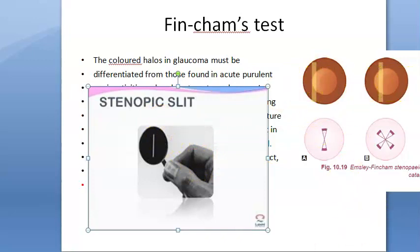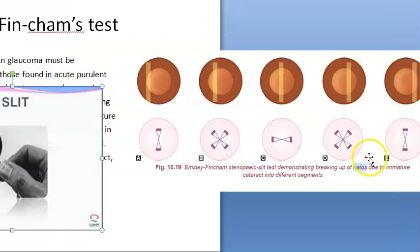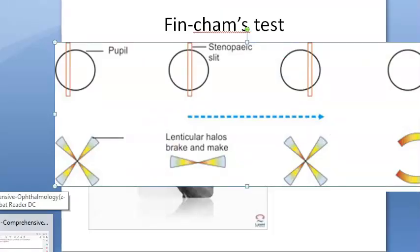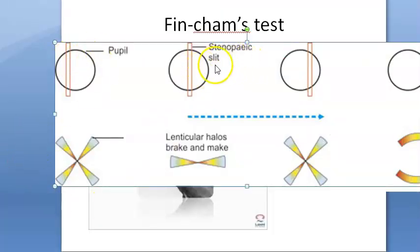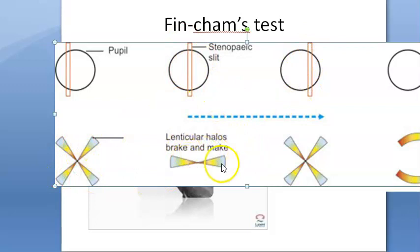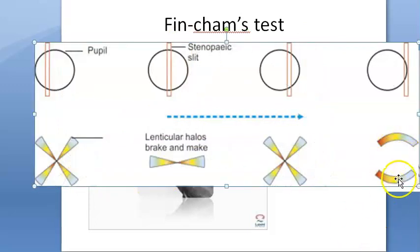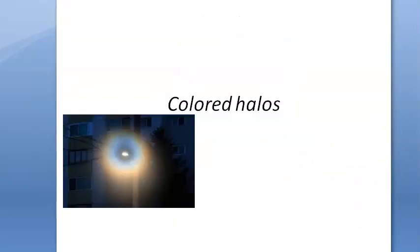In the case of cataract, the colored halo breaks up into different segments as the slit is moved. The diagram shows the steno peak slit — both the vertical one — and demonstrates that lenticular halos break up, confirming a cataract origin.